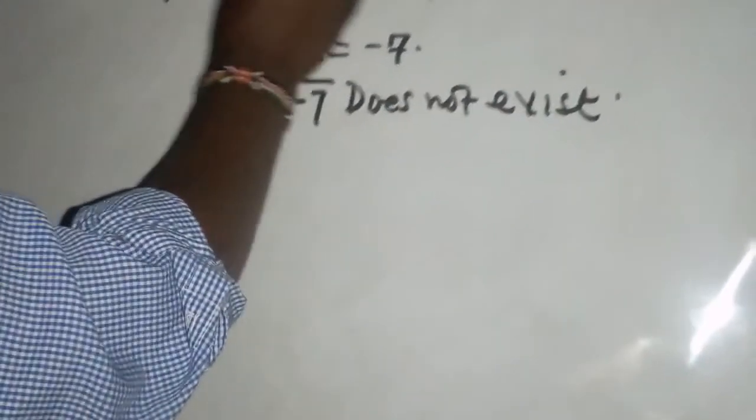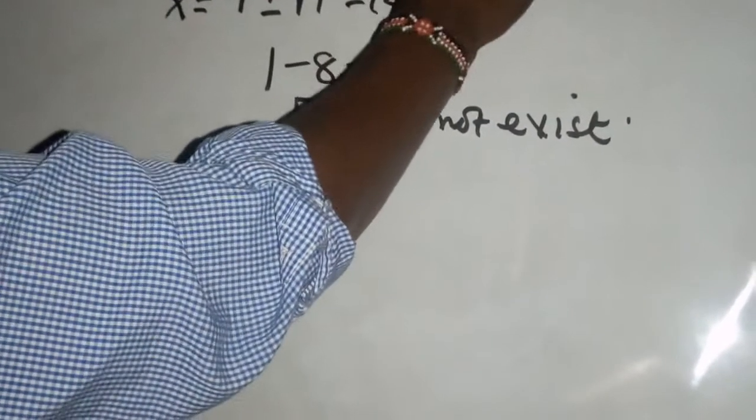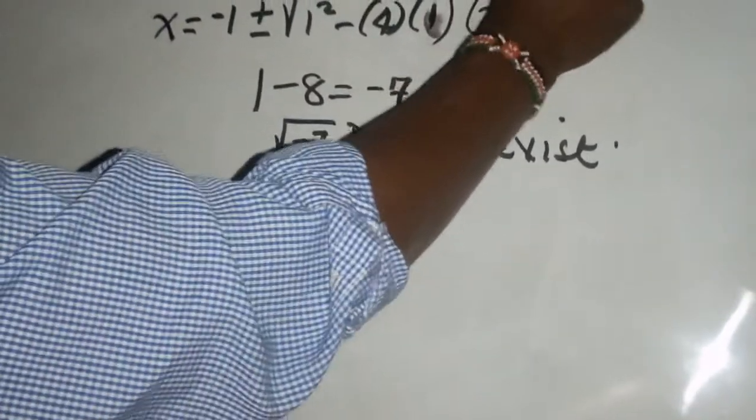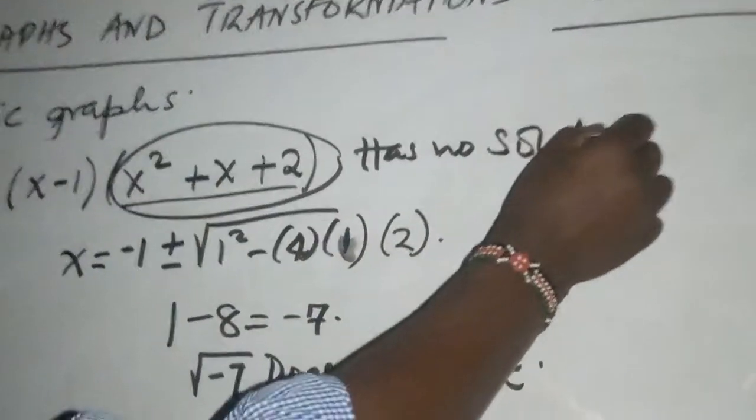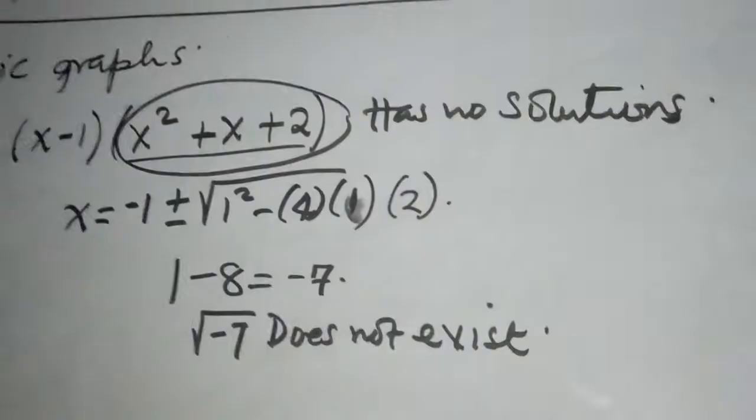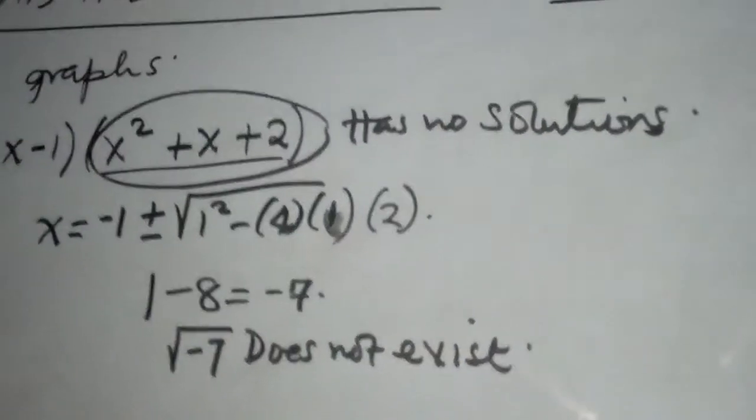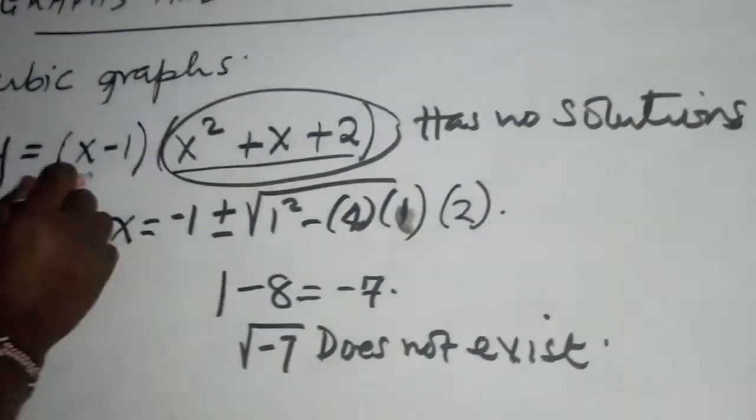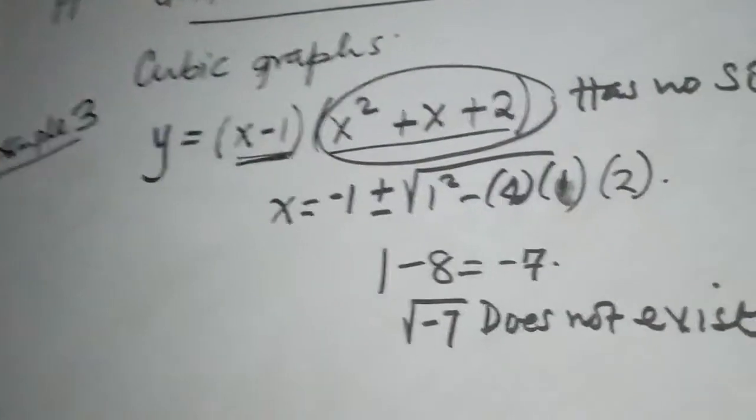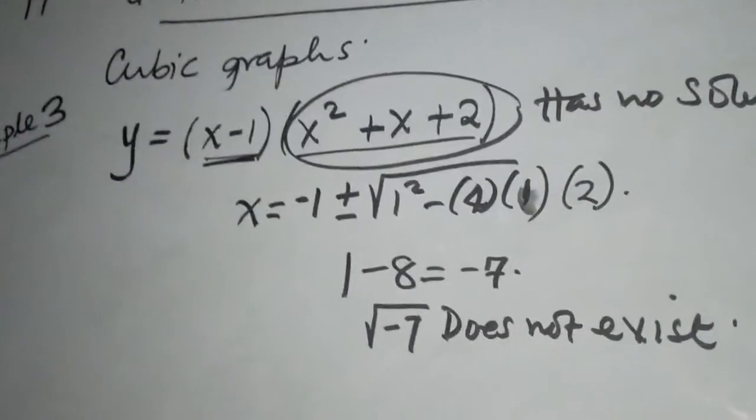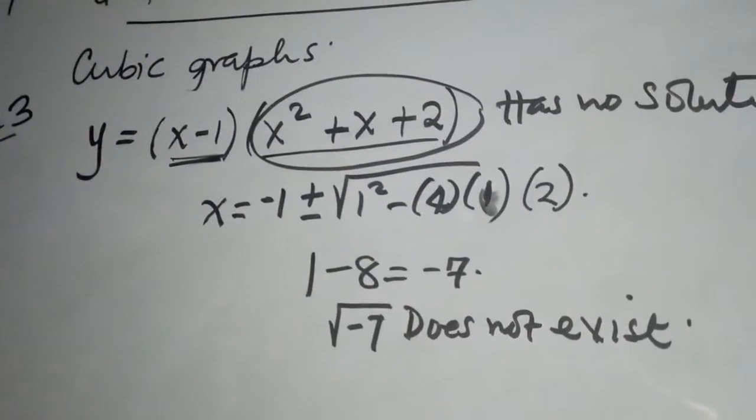So it is very important to note that this part has no solutions. If it has no solutions, then the only bracket that can give us the critical value of x is the first bracket, and x is only equals to positive one.